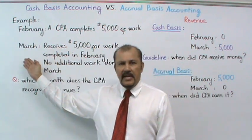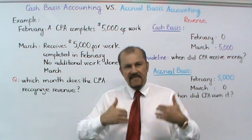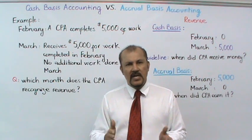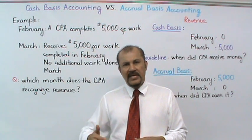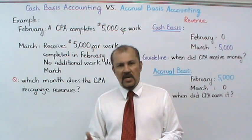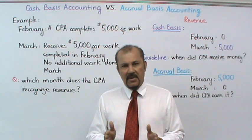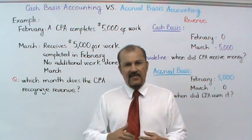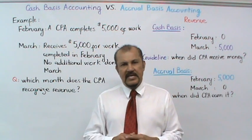In the month of March, the CPA receives all of the $5,000 from his clients for work completed in February. Also in the month of March, the CPA was unable to find any additional work, so he did absolutely no work in March. The only thing that happened in March was he received the $5,000 of cash for the work done in February.